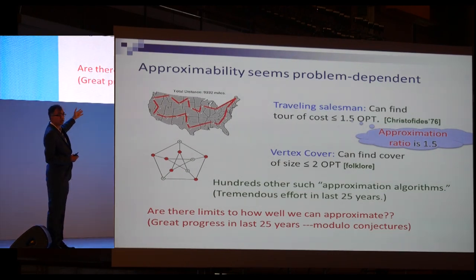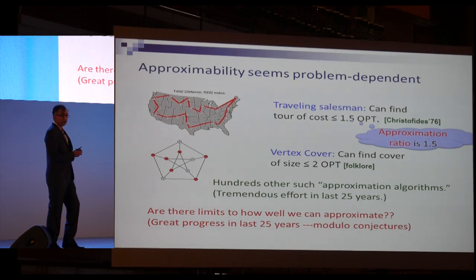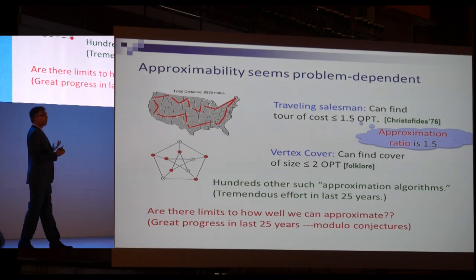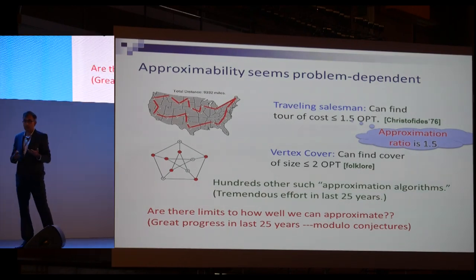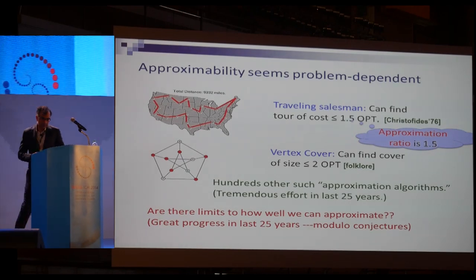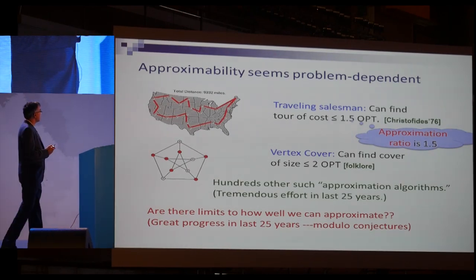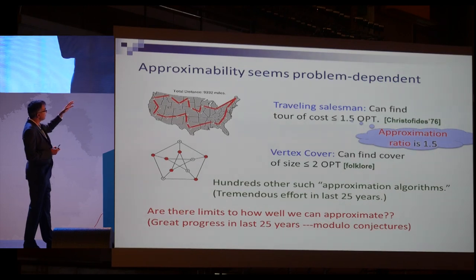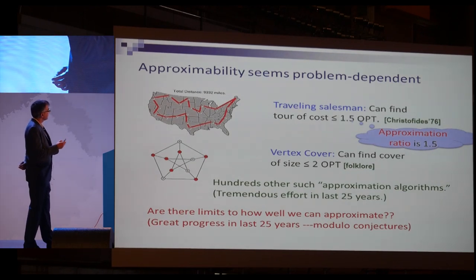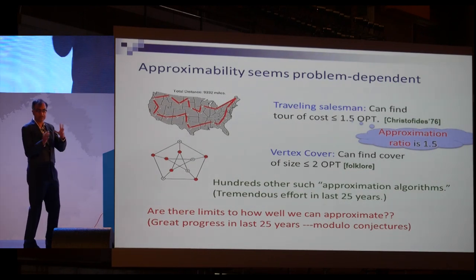Given that all these approximation algorithms achieve different approximation ratios, the natural question is: are there limits to how well we can approximate? For instance, Christofides' algorithm has been around for almost four decades — can we do better, or are there limits in polynomial time? There has been great progress in the last 25 years, again modulo conjectures, and Khot's work fits in that context.